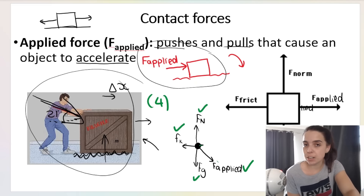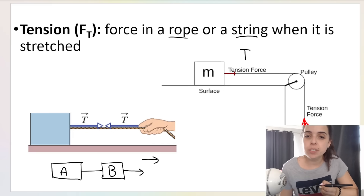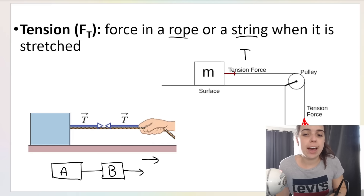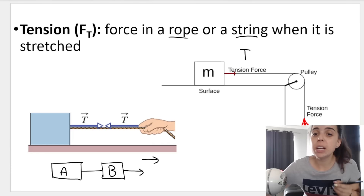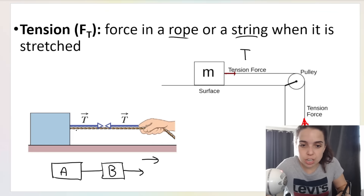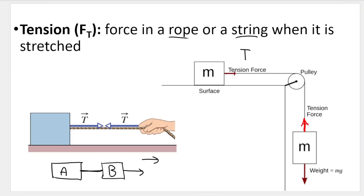Then we get what we call a tension force — a force in a rope or string when it's stretched. You will often see this in scenarios where someone is pulling a box and there's tension in that rope. When two objects A and B are connected by a rope or string and someone pulls one object, the tension in the rope causes the other object to be pulled along as well. And behind me you can also see a pulley situation where tension exists in the rope.